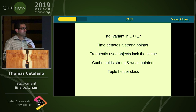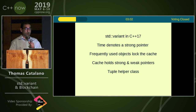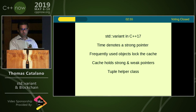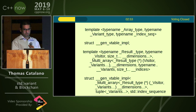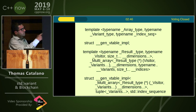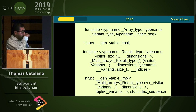The cache holds strong and weak pointers internally. Then you have the tuple helper class — before, indexes used to have to be written manually, but now you can write the tuple. This is a portion of the header file showing an example of building its own array, all included within the library.